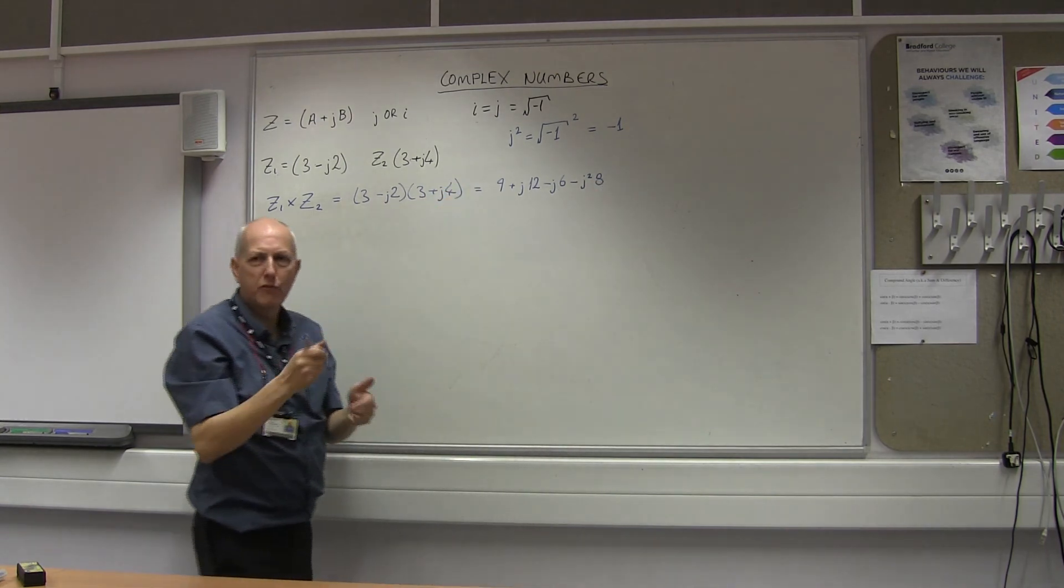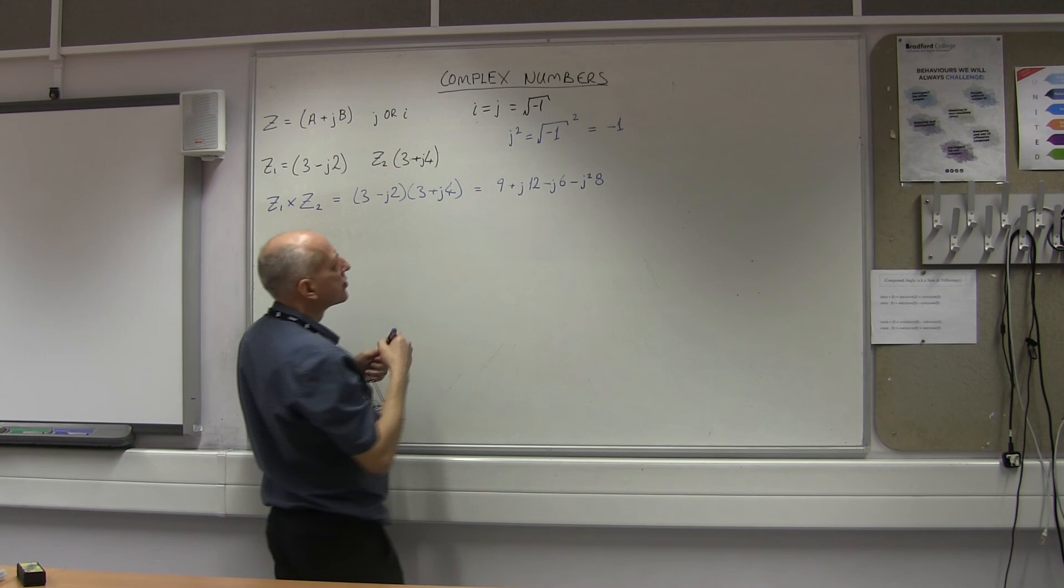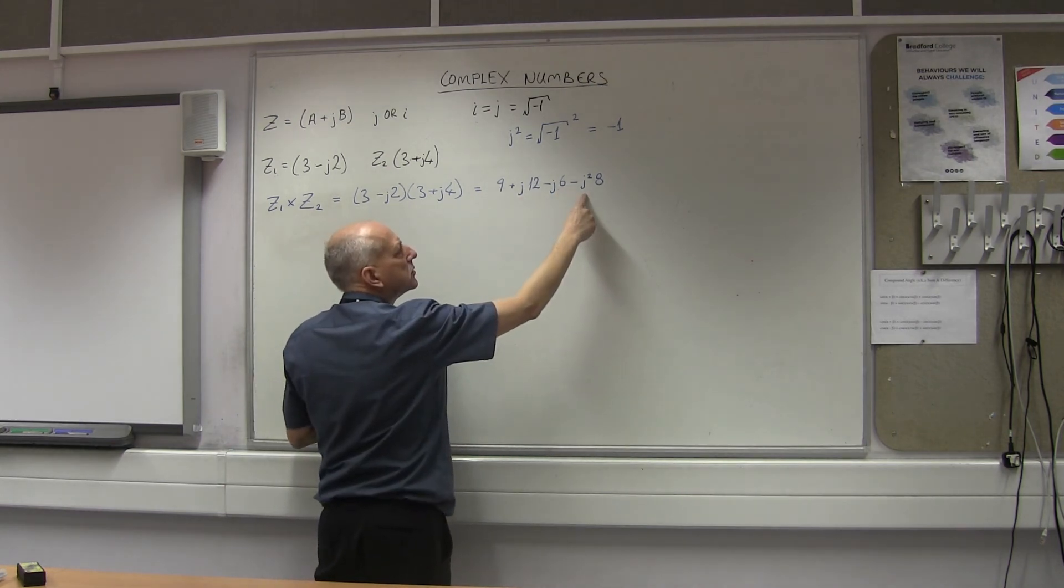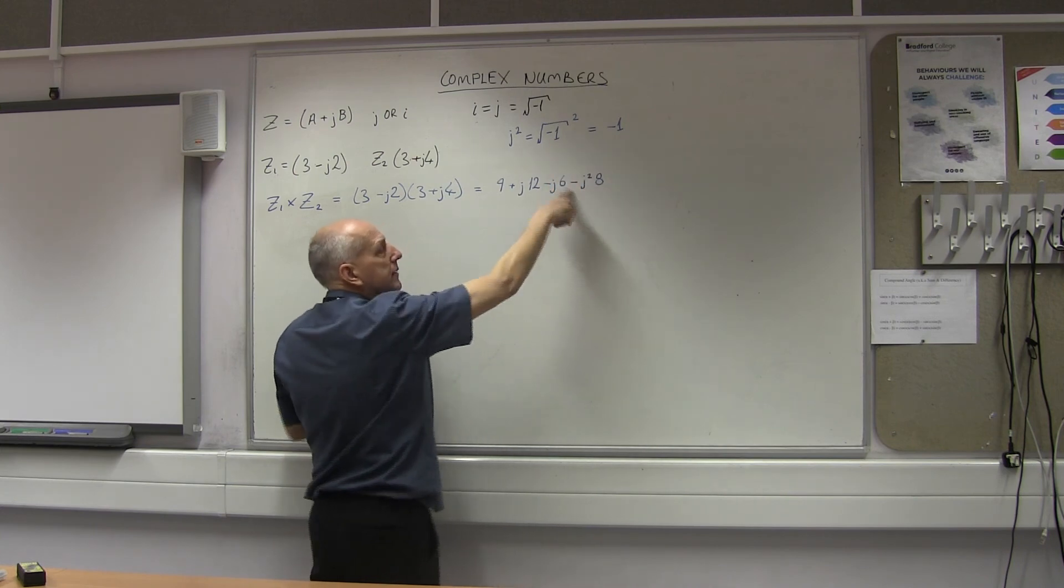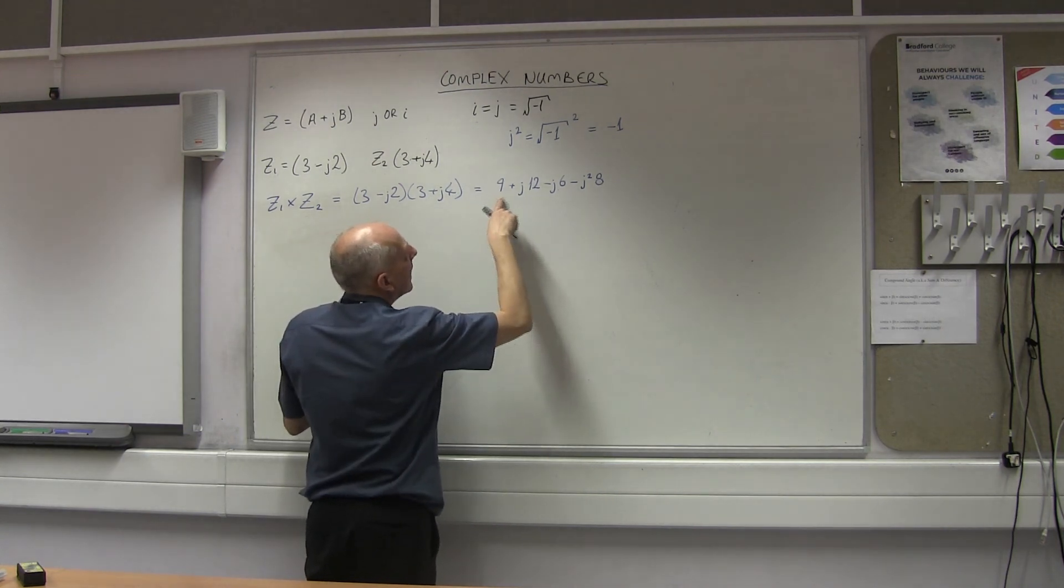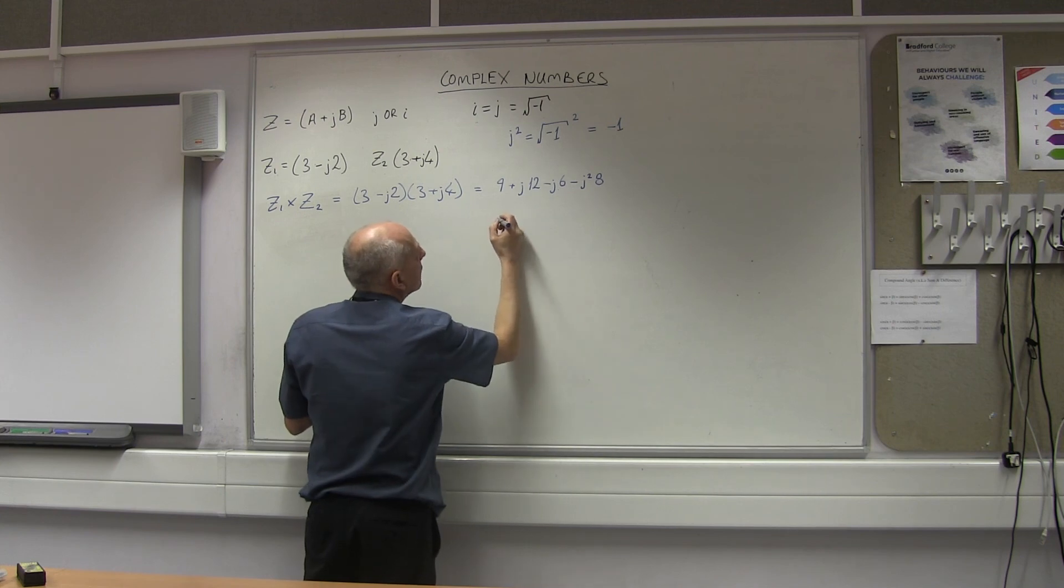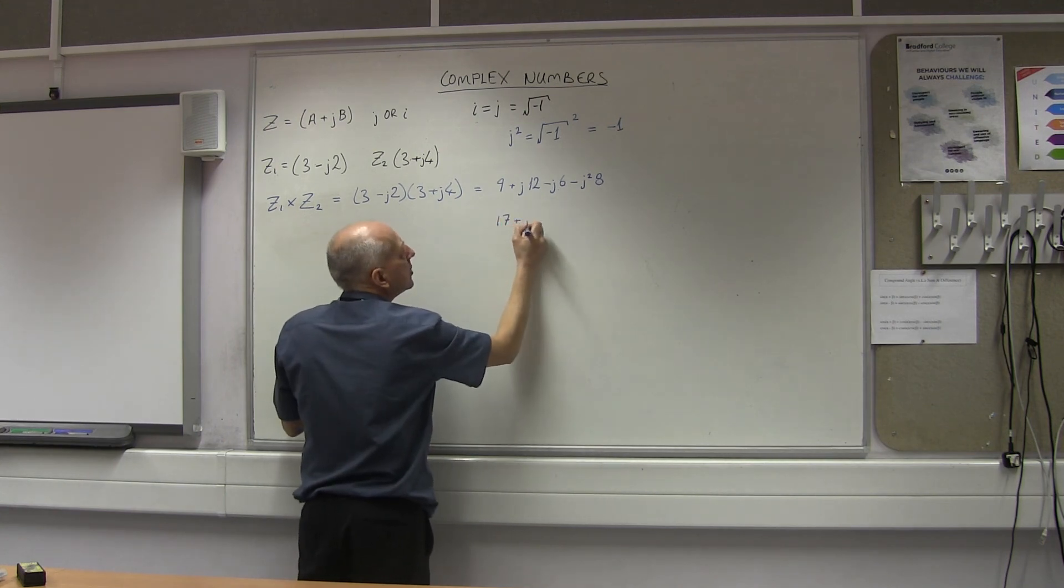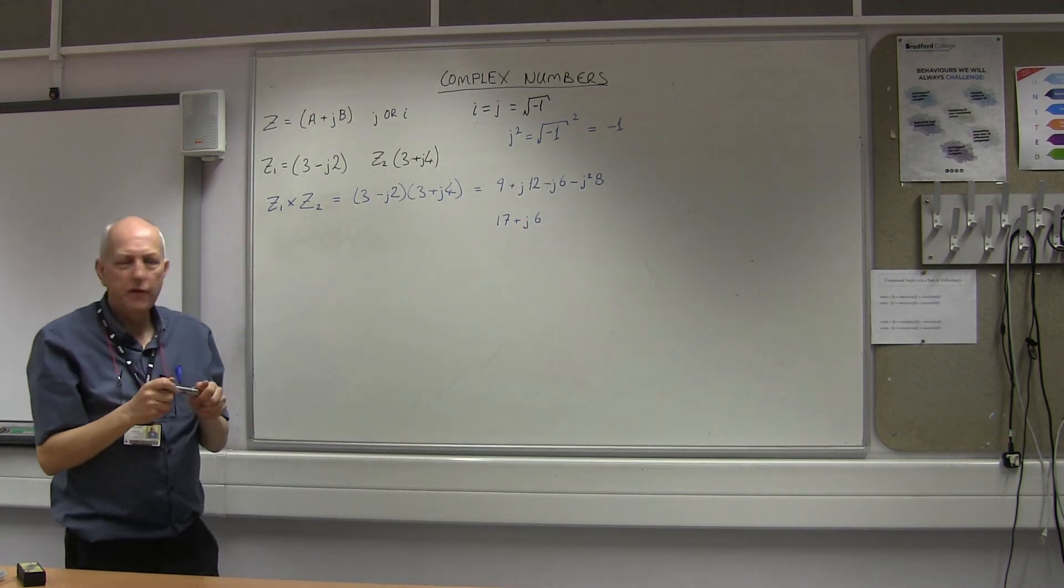Not surprisingly similar numbers to last time, but the signs are different so the process will end up different. This is going to become plus because of that J squared issue. So this is a minus times a minus becomes plus. So I've now got 9 plus 8 again, so I've got 17. And this time I've got plus J6. So fairly straightforward.